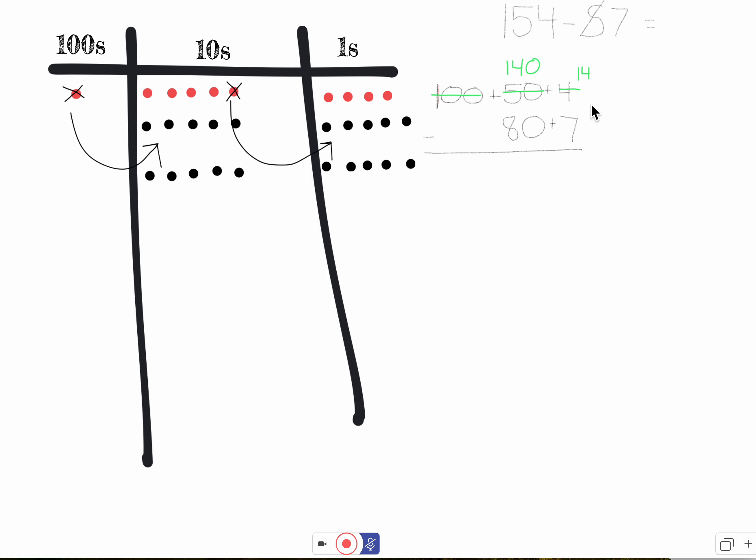Okay, I'm going to separate seven: one, two, three, four, five, six, seven. Okay, and I have one, two, three, four, five, six, seven left.